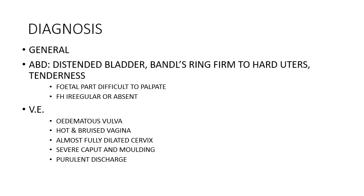Signs include a distended bladder and Bandl's ring formation. The uterus is hard and tender, and fetal parts may be difficult to palpate. The fetal heart may be irregular or absent. On vaginal examination, the vulva and perineum may be hot and bruised, the cervix is almost fully dilated, and there will be severe caput and molding. Purulent discharge from the amniotic fluid indicates the fetus is in severe distress.